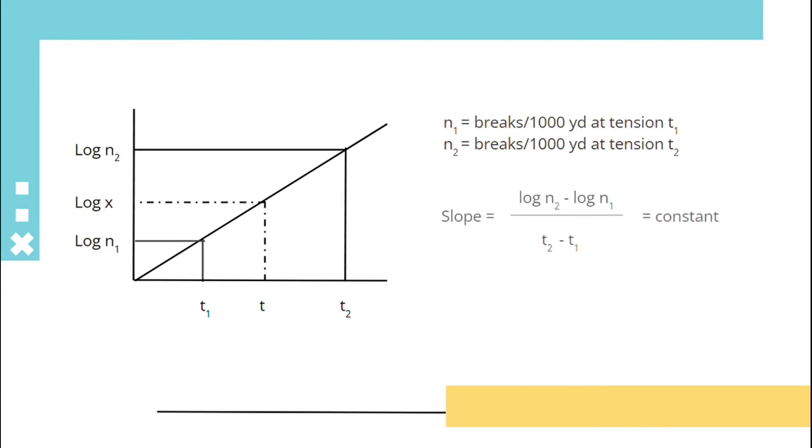Or it can be indicated as tension T equals to T1 plus T2 minus T1 multiplied by log X minus log N1 upon log N2 minus log N1.